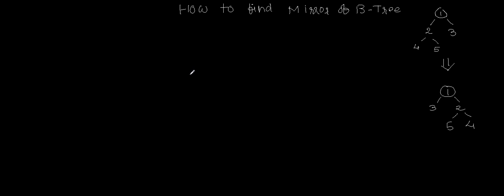Now if you want to make this kind of binary tree, how can you proceed? Say suppose you have node 1, then 2, then 3, then 4 and 5. When you want to make the mirror of the tree, the right subtree should become the left subtree, and that should happen recursively for each and every level. For each level we are changing, and if there are any children of 3, then in those also the right and left subtrees should be changed.